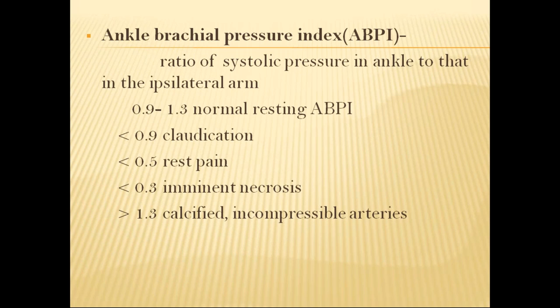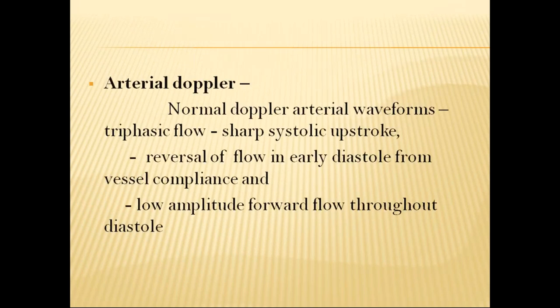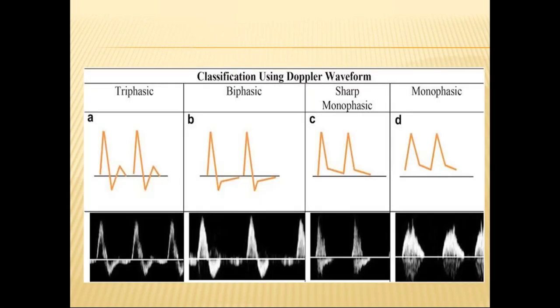The most common first-line investigation is the arterial Doppler. Normal arterial Doppler waveforms are triphasic — there is a sharp systolic upstroke, reversal of flow in early diastole from vessel compliance, and low amplitude forward flow throughout diastole. With obstructive disease, the initial feature lost is the reversal of flow component, leading to biphasic flow. In severe disease, there is blunting of the arterial waveform with decreased amplitude and decreased slope of upstroke, and with worsening symptoms, increased diastolic flow results in monophasic flow.